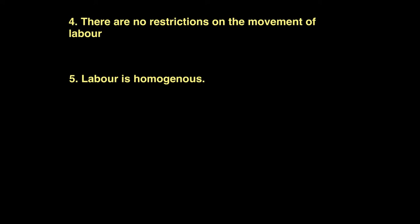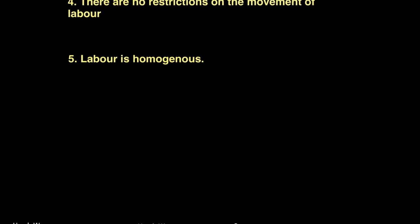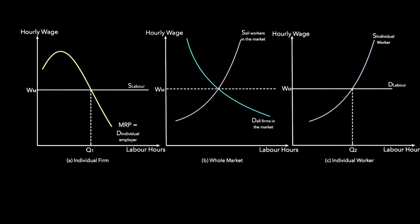Now let's see this in terms of a diagram and understand how the employer and employee will be wage takers in this market. We will be looking at three diagrams: one for the whole industry, one for the individual worker, and one for the individual firm — so worker, firm, and whole market. In the market, demand and supply forces determine the wage rate.